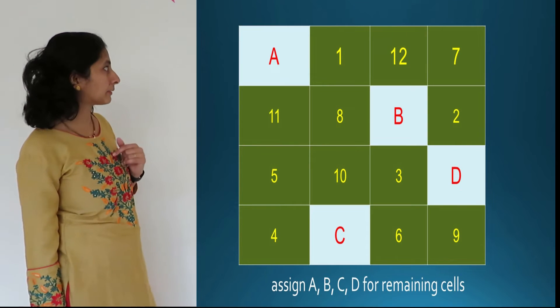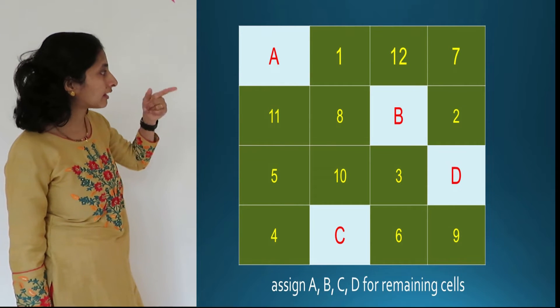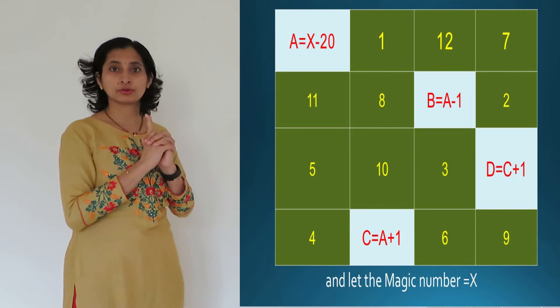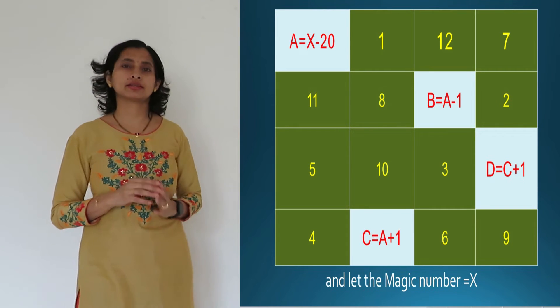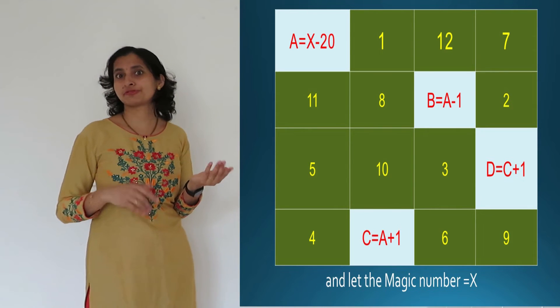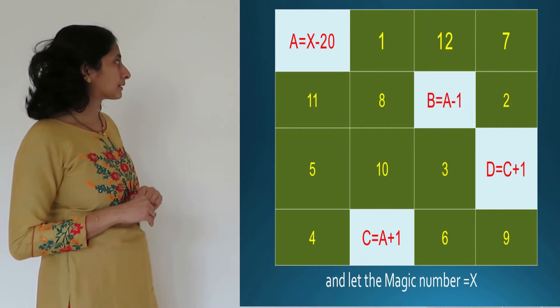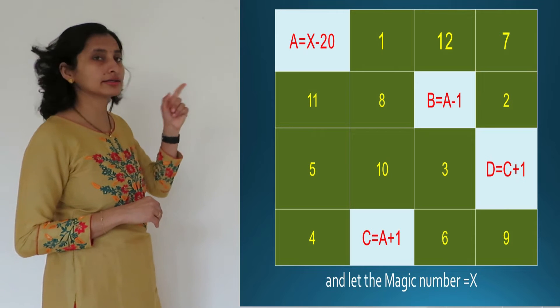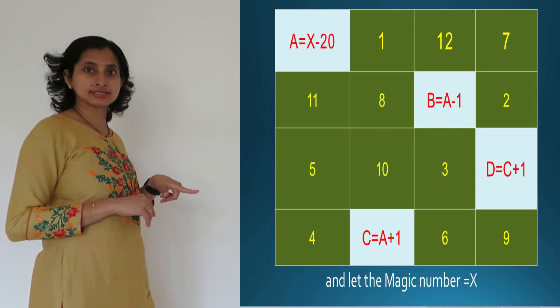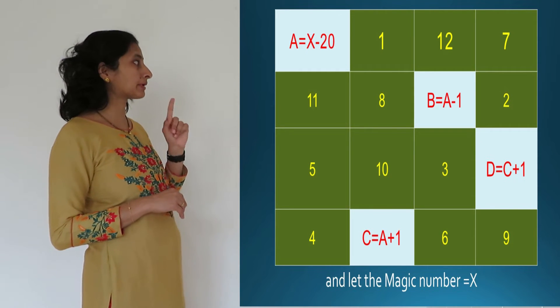These are the prefixed numbers. For the remaining cells, let's assign A, B, C, and D. So now, what is A? A is equal to X minus 20. What is X? X is the magic number, that is 55. Next, B. What is B? B is A minus 1. And C. C is A plus 1. And D. D is equal to C plus 1.